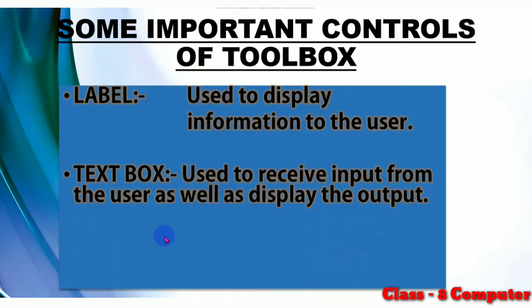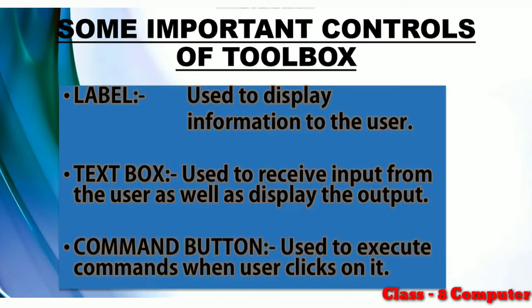Secondly, we have the Text Box control. This is a very useful control — it is used to receive input from the user as well as to display output. Any input such as a name or number can be taken through the text box, and the result can also be displayed using it. Next, the Command Button control is also very important because without it no program can execute in Visual Basic. It is used to execute commands when the user clicks on it, and to display results, output, or messages.